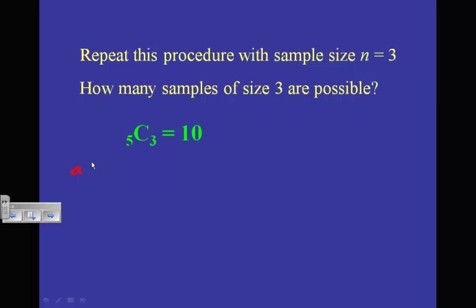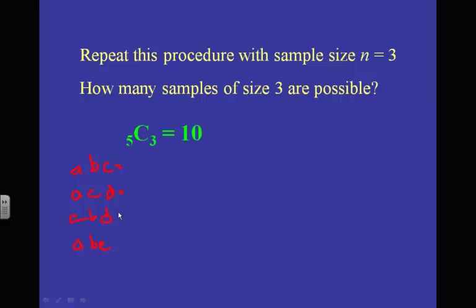I could list all 10 combinations of size 3 — for example, A, B, C together; or A, C, D; or A, B, D; or A, B, E — and so on for all 10 possibilities. Then I would find the average of each group of three: average A, B, C and get the average; average A, C, D and get the average; average A, B, D and get the average; average A, B, E and get the average — and do that for all 10 samples.